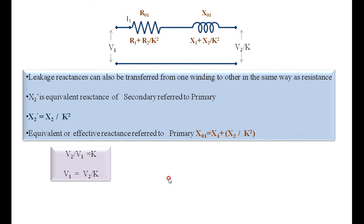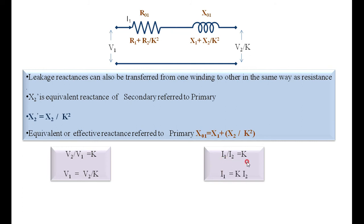The voltage V1 is intact on the primary side. The secondary voltage V2 can be transferred to the primary side using the voltage ratio: V2 by V1 equals K, so referred to primary it becomes V2 divided by K. Similarly, the current: I1 by I2 equals K, therefore I2 by I1 equals 1/K. When referring to the primary side, the secondary current becomes K times I2. This is how we draw the equivalent resistance and equivalent reactance referred to the primary side.